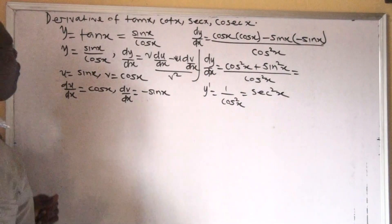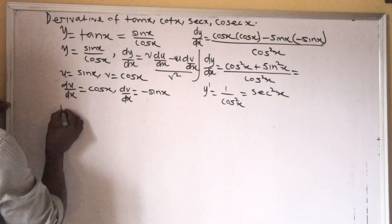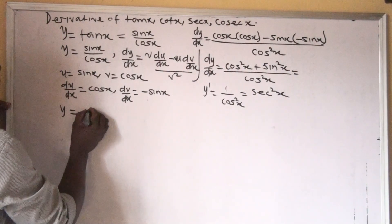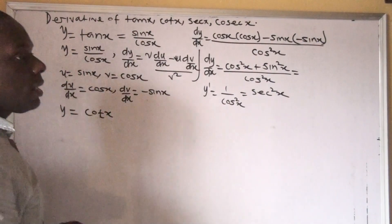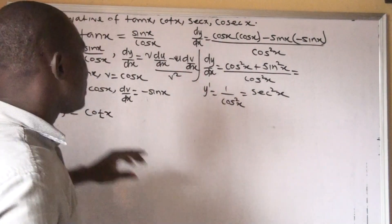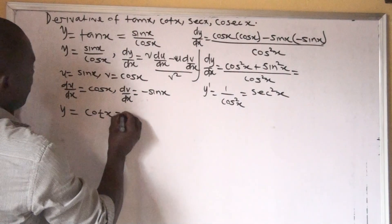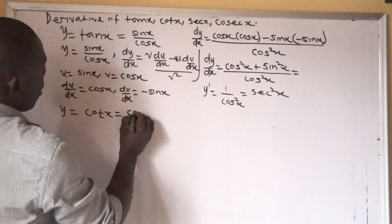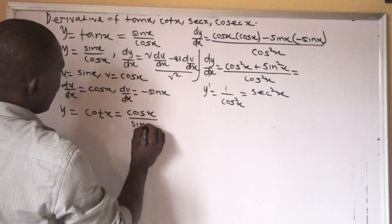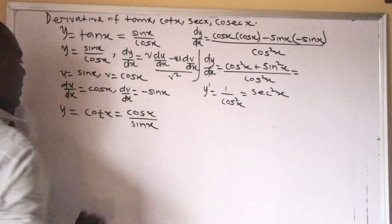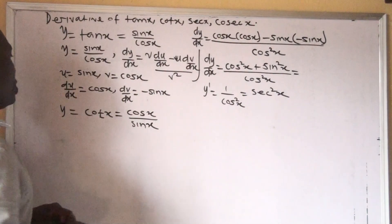Now let's look for the other one. The derivative of y is equal to cot x. Cot here is the inverse of tan. So cot is simply cos x over sin x. We also apply the same principle — our u is the numerator, and our v is the denominator.